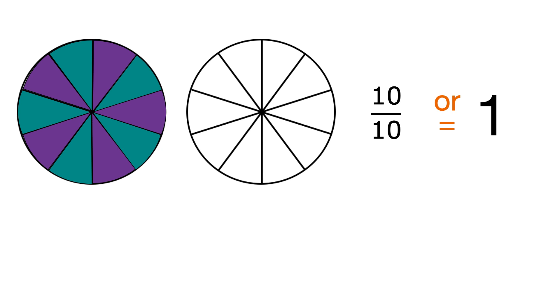If we carry on counting 11 tenths, which is the same as 1 and 1 tenth, 12 tenths is the same as 1 and 2 tenths, 13 tenths is the same as 1 and 3 tenths and so on.